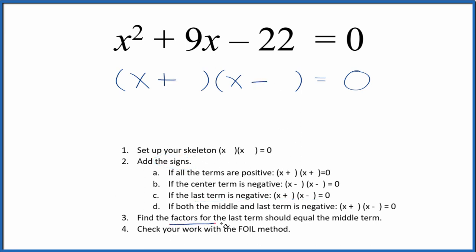Once we've done that, we can find the factors for the last term. That's the 22. They should equal the middle term, the nine. So the factors for 22 are...